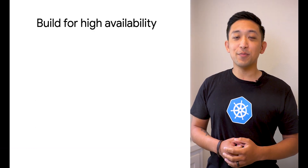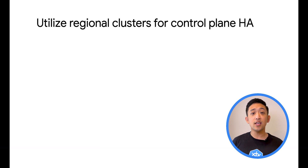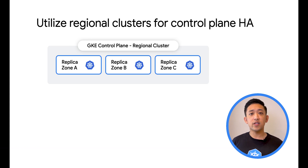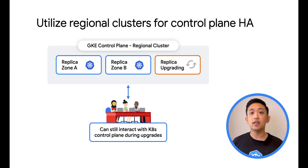When building for high availability in GKE, you'll have considerations both at the control plane and the node level for your workloads. Regional clusters in GKE are recommended for achieving high availability. With regional clusters, by default, there are three replicas of your control plane, each in a different zone of a region. This protects your control plane against any zonal outage. It also provides high availability during your upgrade lifecycle, as replicas of the control plane are upgraded one at a time, with the remaining two still available to serve requests. This means that operators and pipelines can continue to interact with the Kubernetes API, even during upgrades.